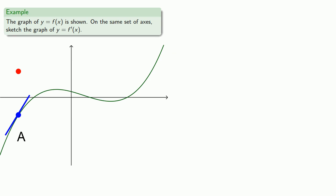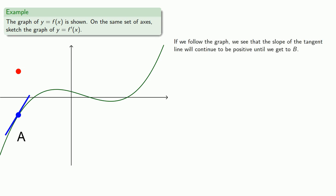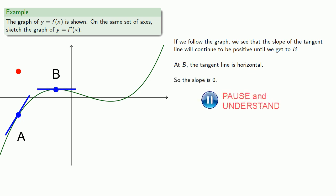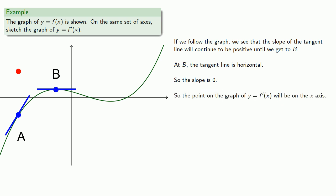Now if we follow the graph, we see that the slope of the tangent line will continue to be positive until we get to b. At b, the tangent line is horizontal, so the slope is 0. So the point on the graph of y equals f prime of x will be on the x-axis.